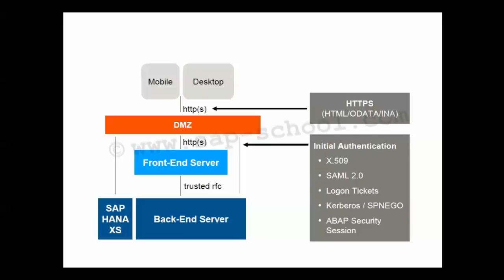Each of these layers provides a touch point and also presents security aspects that need to be considered. When a user launches an SAP Fiori application, the launch request is sent from the client to the ABAP front-end server via the SAP Fiori launchpad. During the launch, the ABAP front-end server or gateway server authenticates the user using authentication mechanisms or single sign-on mechanisms. The available authentication methods include X.509, SAML 2.0, logon tickets, Kerberos, and ABAP security session. This is not the complete list, just a selection.